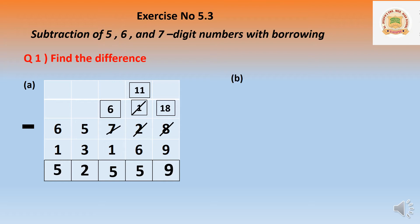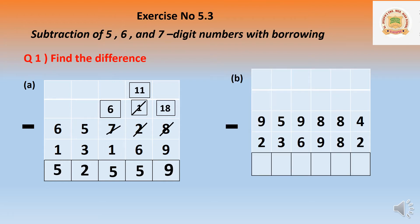Now let us do the b question: 9,59,884 minus 2,36,982. In the ones place: 4 minus 2 equals 2. In the tens place: 8 minus 8 — same digit, so it is zero. Eight minus eight is zero.